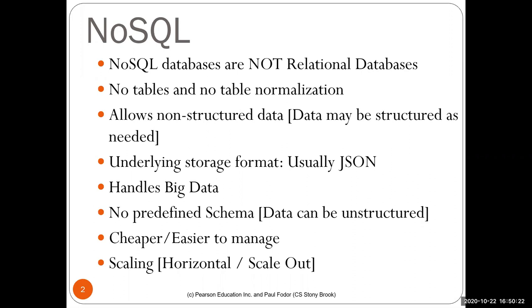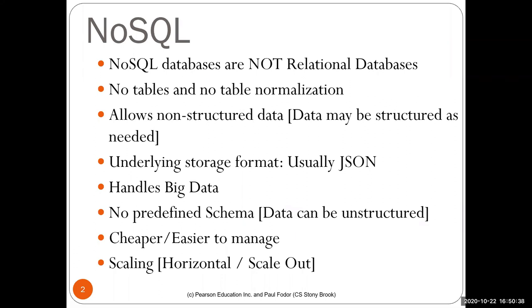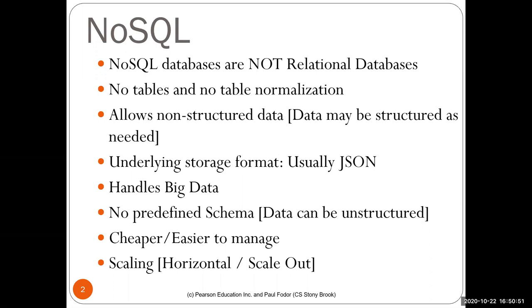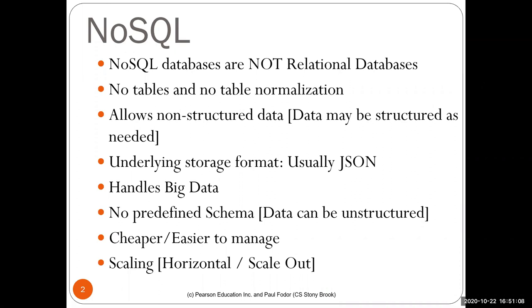We'll talk about why NoSQL databases are more popular for some applications. With horizontal distribution of data, if you have a lot of data but very simple data that you don't use in joins, you can distribute it to multiple smaller servers — you don't have to have one very big server. There is no predefined schema, the data can be unstructured, it's cheaper, easier to manage. Scaling horizontally fits relational databases, and scaling out fits NoSQL databases.